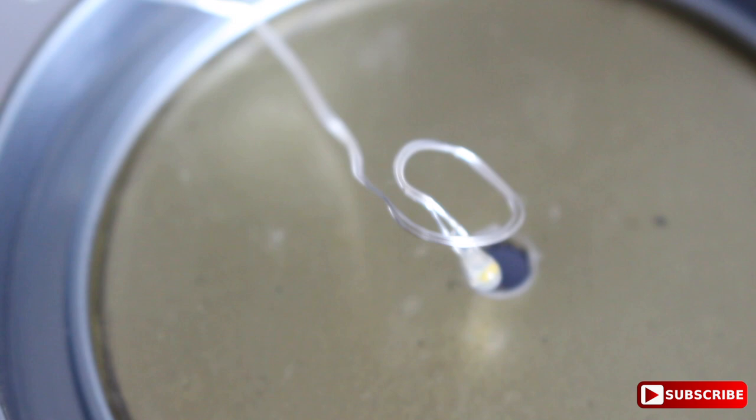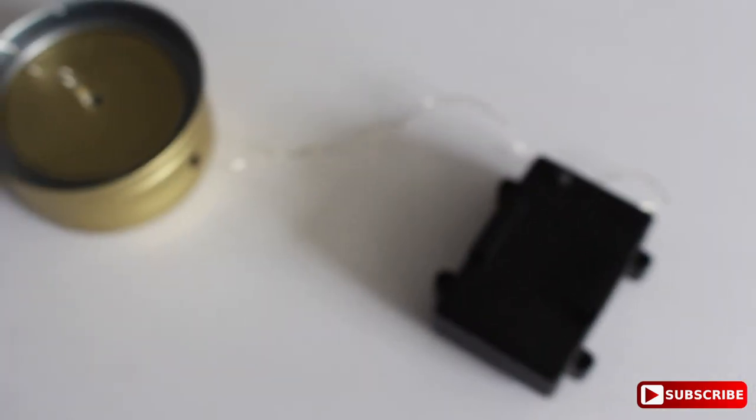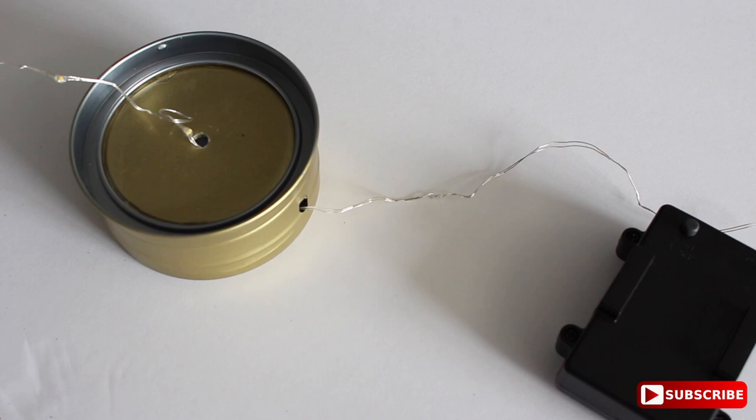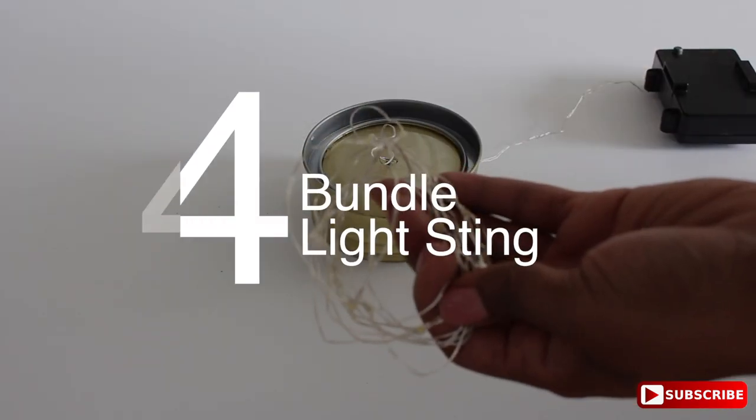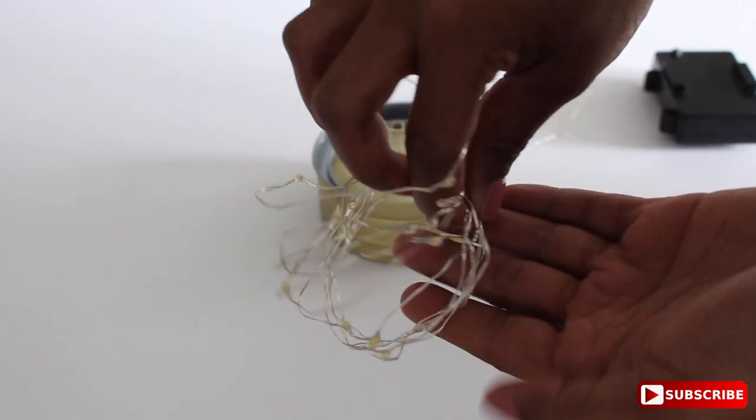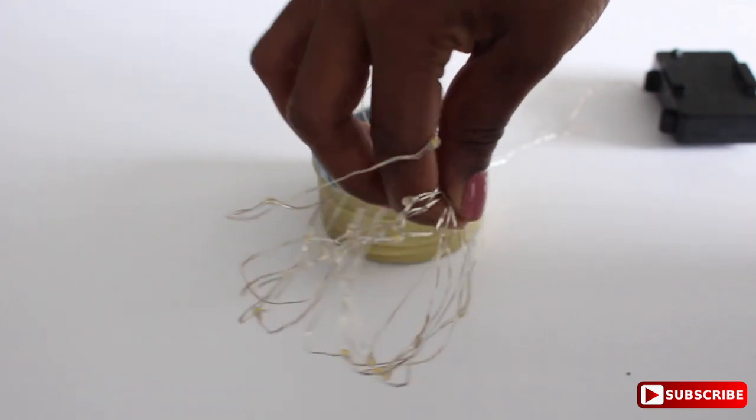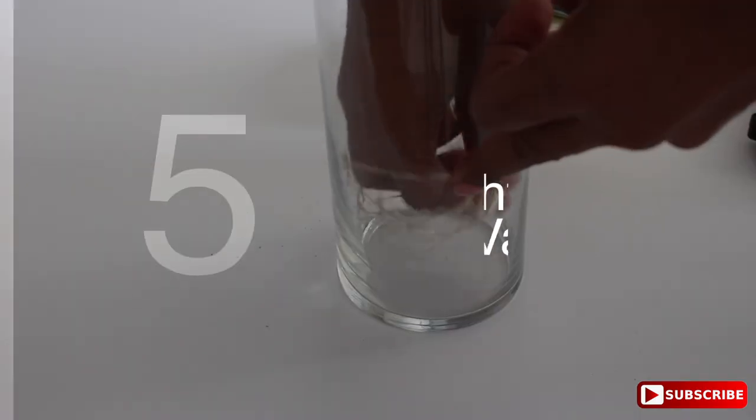Once you get to the last bulb in the string, you're going to make a small loop. This is to prevent the light from going through the hole. And that's the battery pack. So what you want to do is bundle the light string just like so. And then just place it in the glass space.